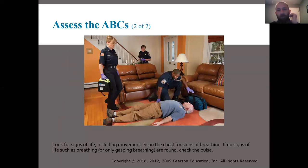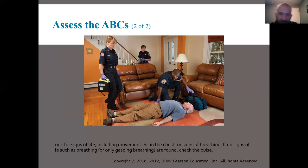We're looking for those threats and we're looking to correct them as soon as we find them. We're also looking for information that could help us later in our assessments. In this picture, they're going to be using the CAB method — they'll check circulation, airway, and then breathing. They'll look for signs of life, any movement. This gentleman isn't talking, isn't moving, isn't doing anything, so we can figure the chief complaint is that he's in cardiac arrest or unresponsive.